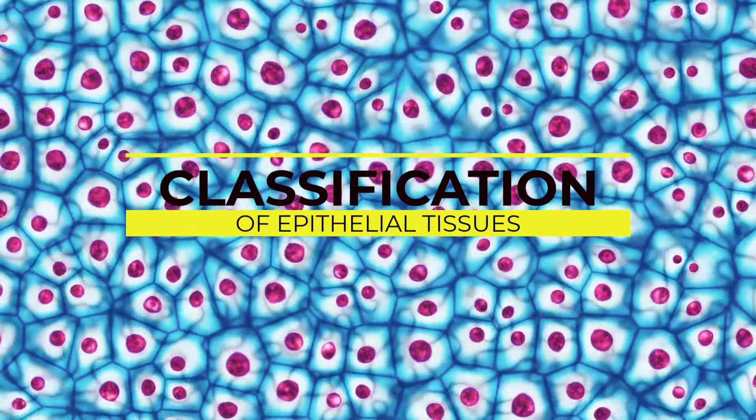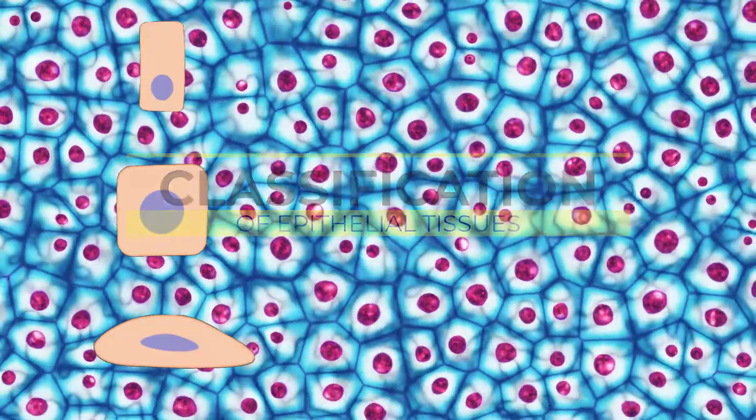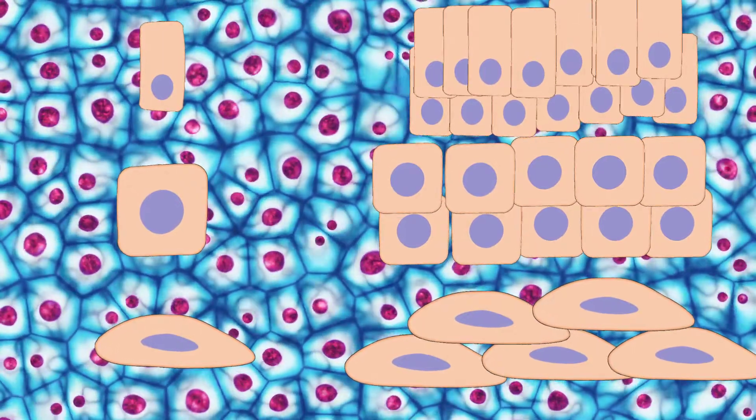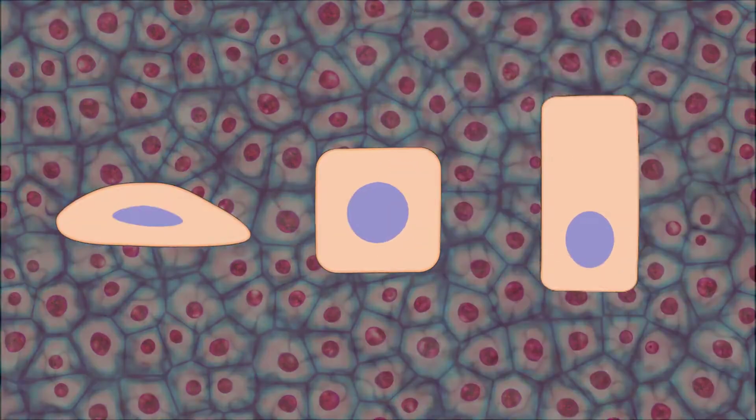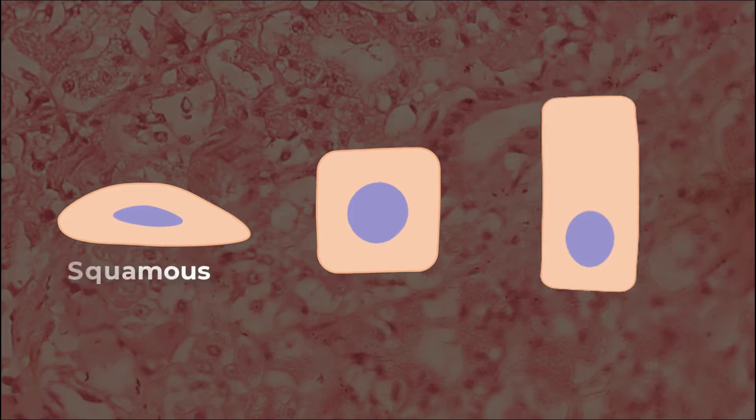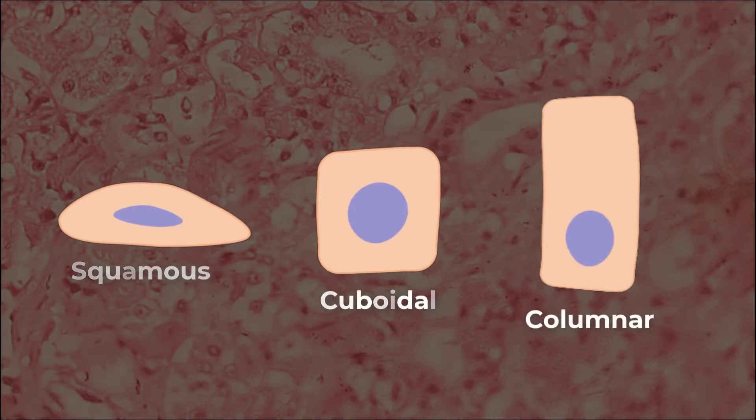Epithelial tissues are classified according to the shape of the cells and number of cell layers formed. The cell shapes can be squamous, cuboidal, or columnar.